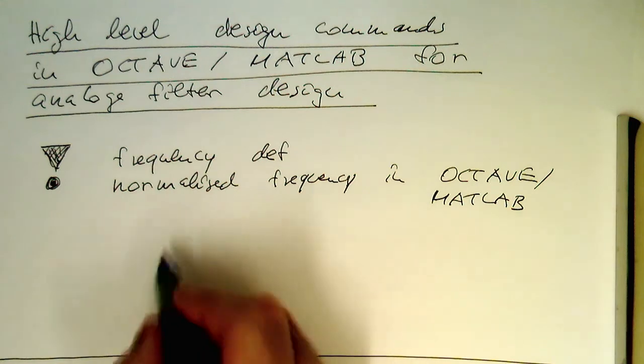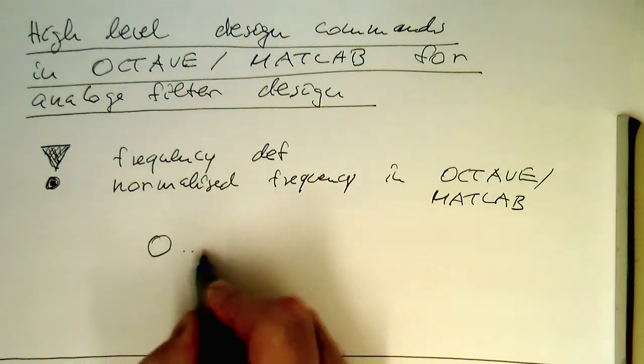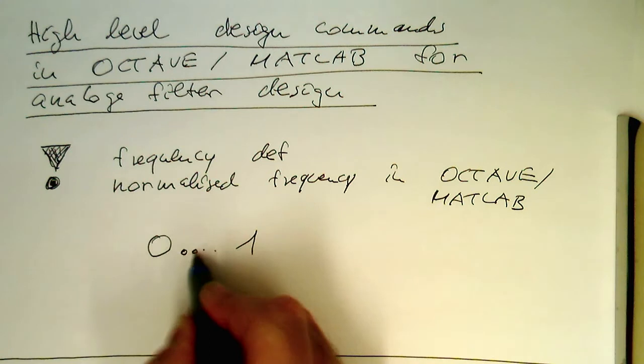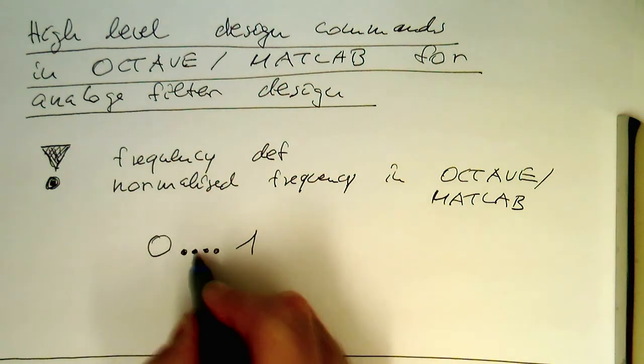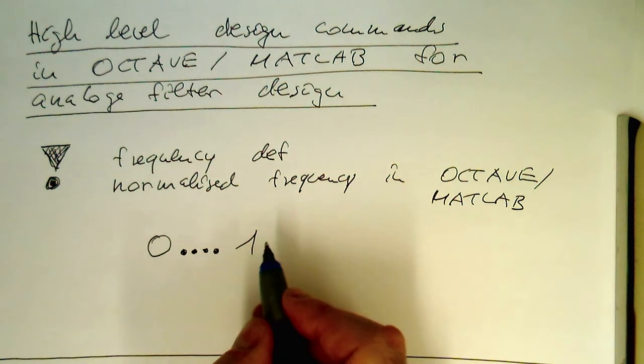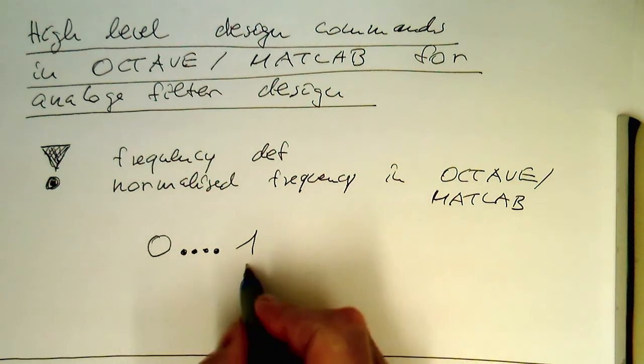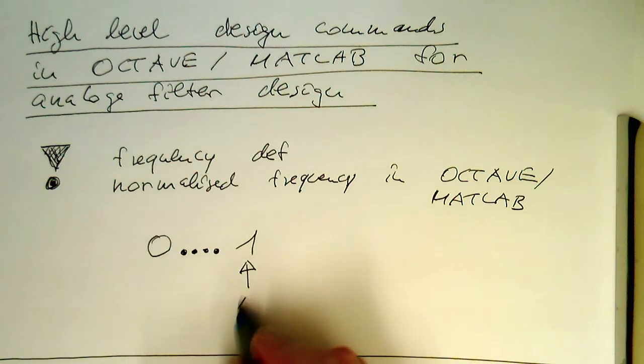...is defined as running from 0 to 1. So our frequency we put in there runs from 0 to 1, and the 1 means Nyquist frequency.